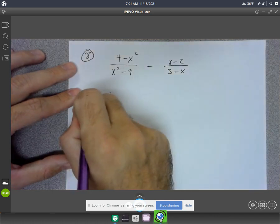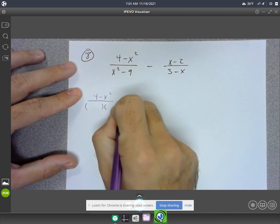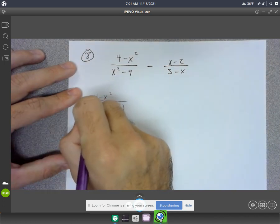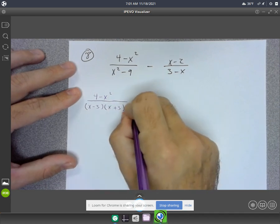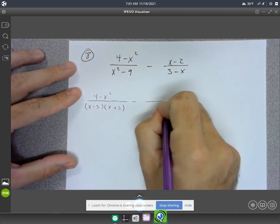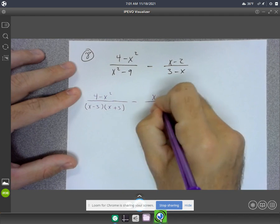Hopefully you did it. Okay, it'll be x minus 3 and x plus 3, and then minus, we got x minus 2.